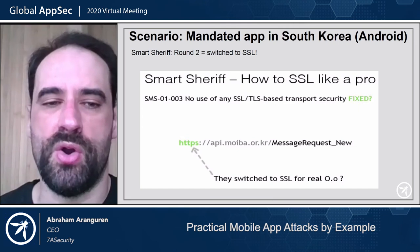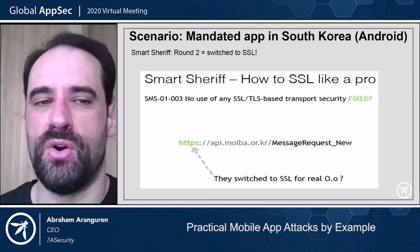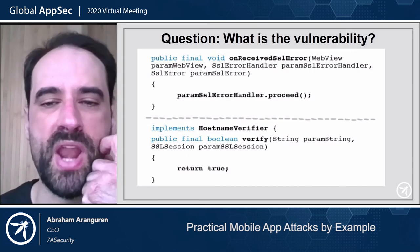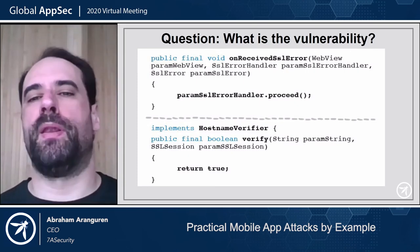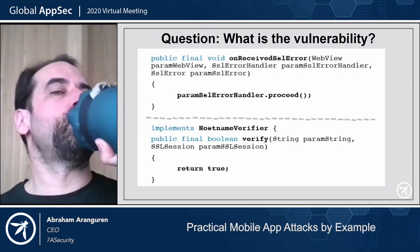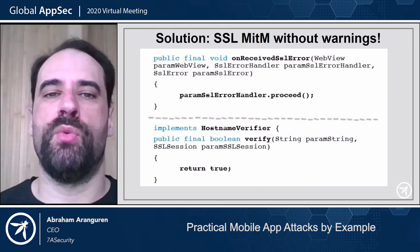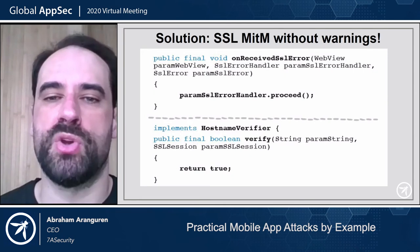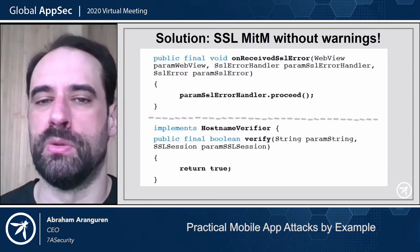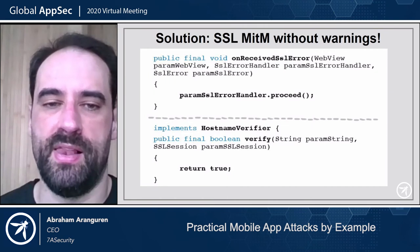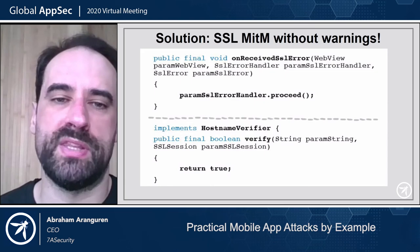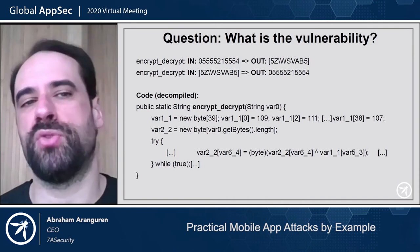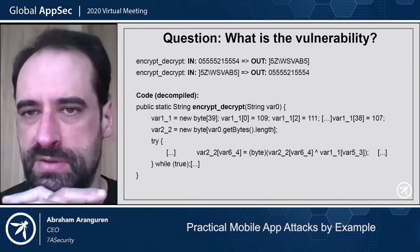On the second round they switched to SSL with HTTPS. We were wondering if this had been fixed, but then we found how they validate certificates. Basically, they have SSL man-in-the-middle without warnings — whenever the application receives an SSL error, it's going to proceed regardless of what the error is. And if the hostname is wrong for the given SSL certificate, it just returns true. So whatever happens, it goes through — it's basically ignoring all warnings.